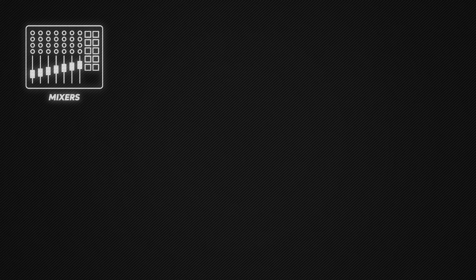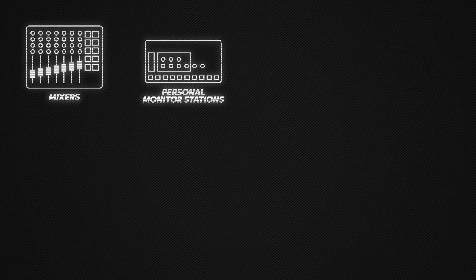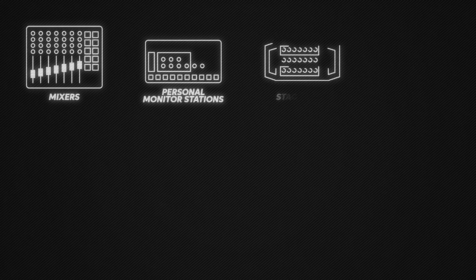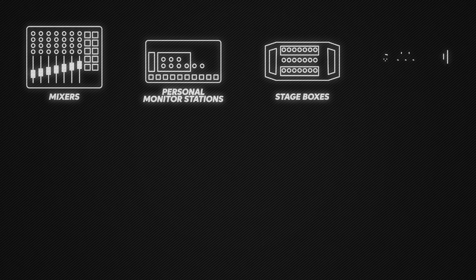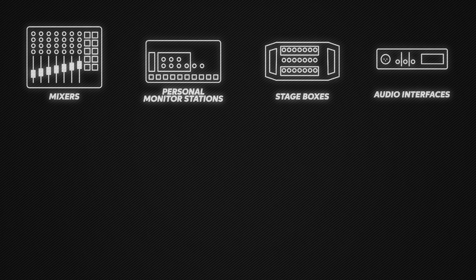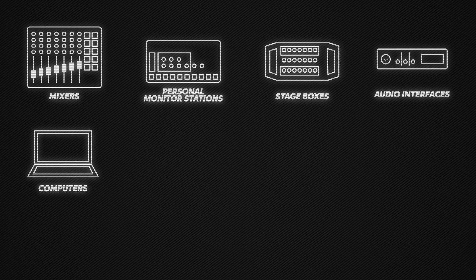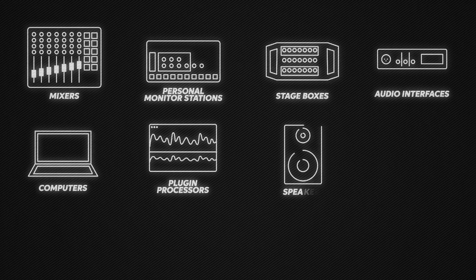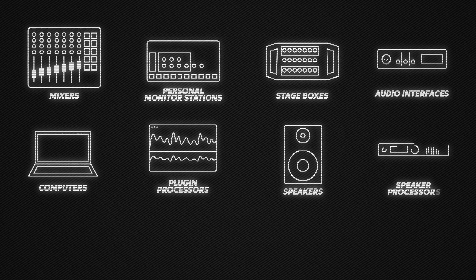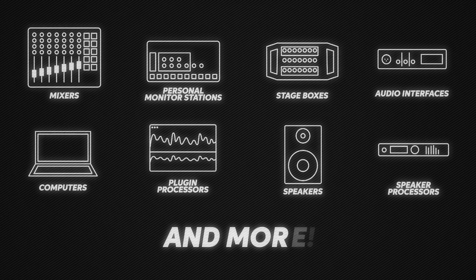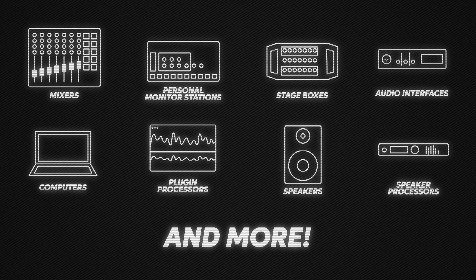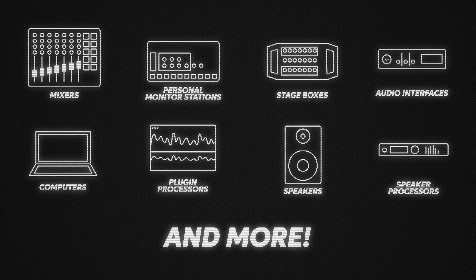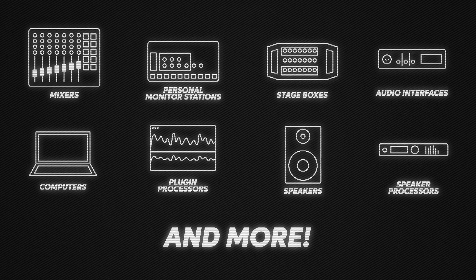Some types of devices that can be AVB capable are mixers, personal monitor stations, stage boxes, audio interfaces, computers, plug-in processors, speakers, speaker processors, and practically any other kind of digital audio or video device.